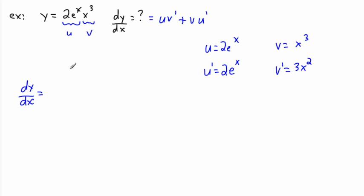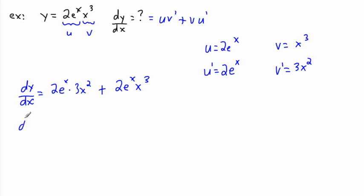Now I have everything I need. The derivative — the slope of the tangent at any point — is u·v-prime plus v·u-prime. That gives us 2eˣ times 3x², plus x³ times 2eˣ. So dy/dx equals 6eˣ·x² plus 2eˣ·x³.